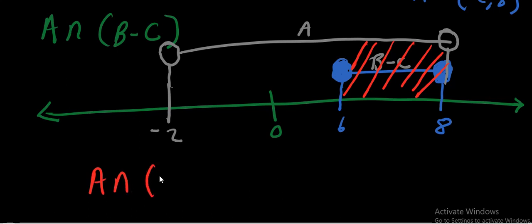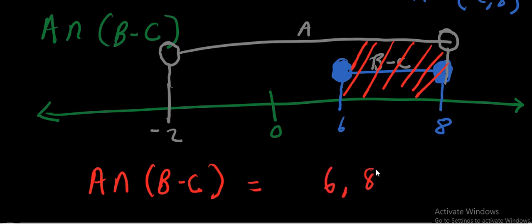Looking at the diagram, the two sets intersect in a certain portion. We can write A intersection (B minus C) equals 6 comma 8. We analyze: is 6 in set A? Yes. Is 6 in set B minus C? Yes.